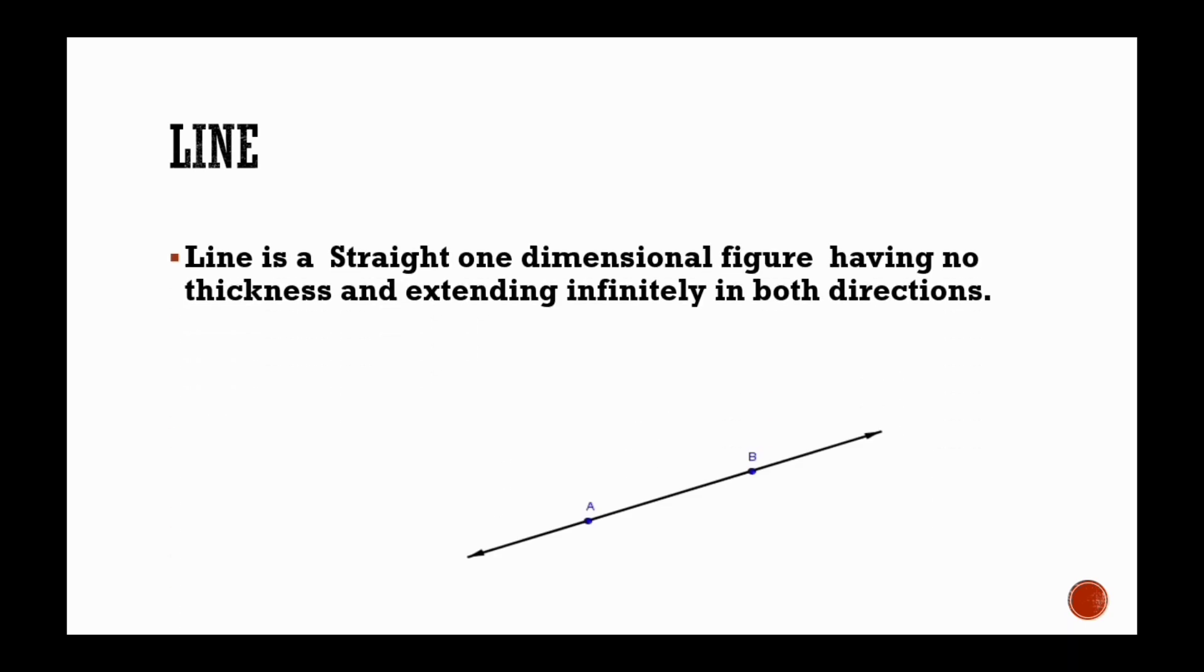What is line? Line is a straight one-dimensional figure having no thickness and extending infinitely in both directions. Lines can be known as straight line.